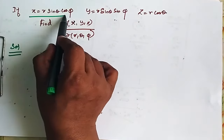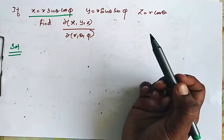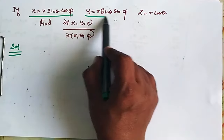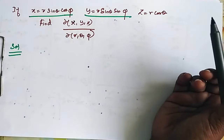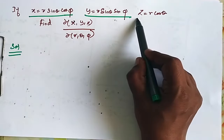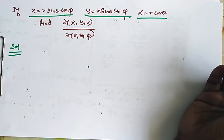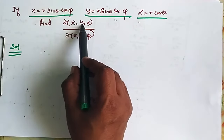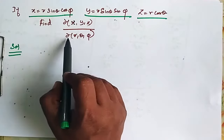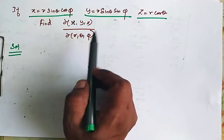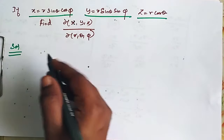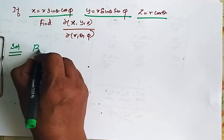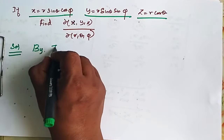Now if x is equal to r sin θ cos φ, y is equal to r sin θ sin φ, z is equal to r cos θ, find ∂(x, y, z) / ∂(r, θ, φ). Now by Jacobians,